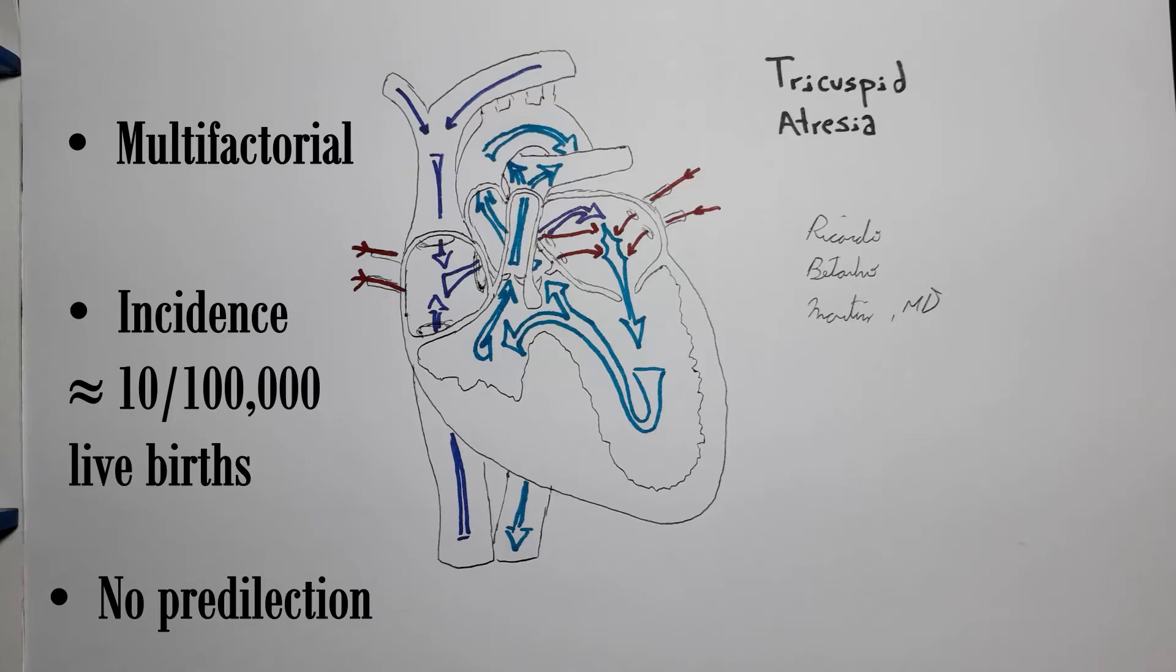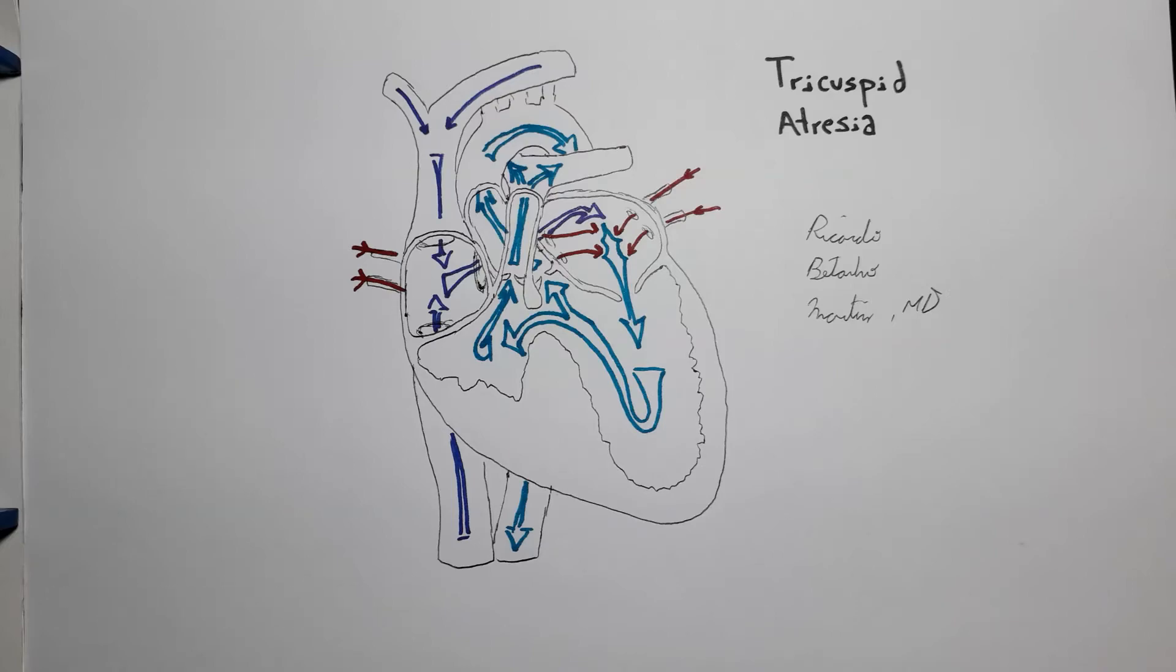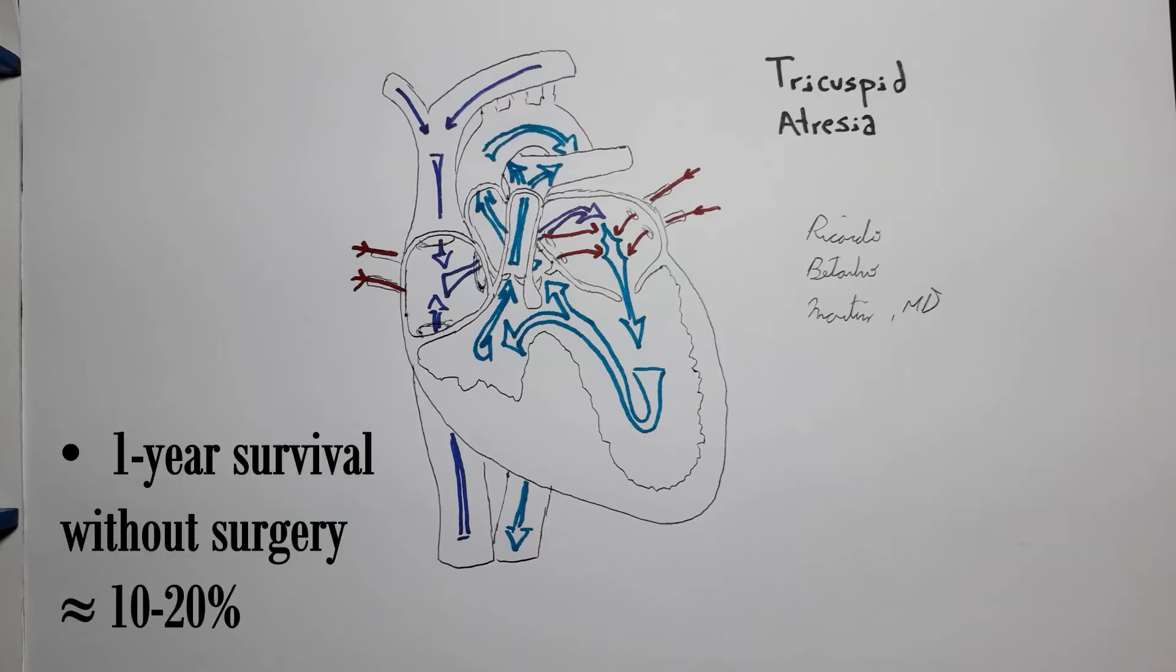Prognosis without surgical treatment is poor, with a one-year survival rate of 10 to 20 percent and definitive treatment is undoubtedly surgical. With surgical treatment, prognosis will depend largely on the associated comorbidities and the severity of the malformations.